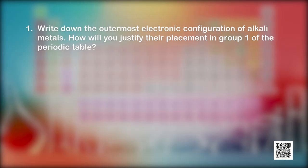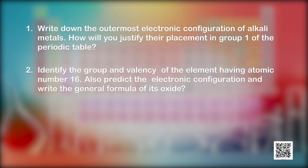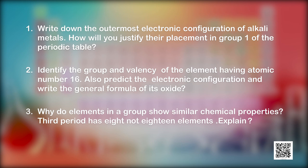Let us test ourselves by solving a few questions. Question 1: Write down the outermost electronic configuration of alkali metals and justify their placement in group 1 of the periodic table. Question 2: Identify the group and valency of the element having atomic number 16, predict its electronic configuration, and write the general formula of its oxide. Question 3: Why do elements in a group show similar chemical properties? Keep practicing and keep learning. Thank you.